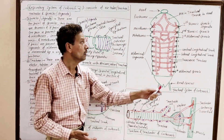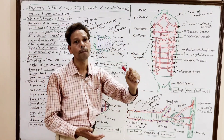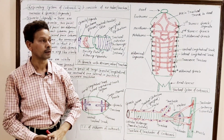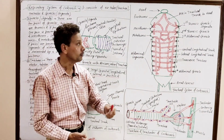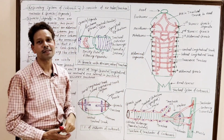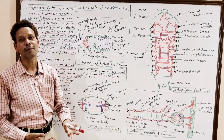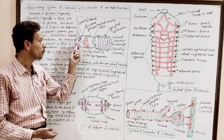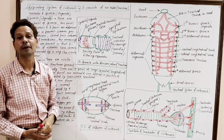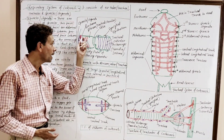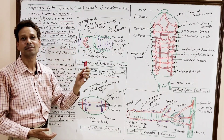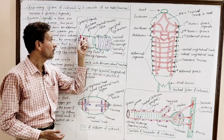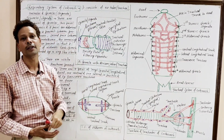The other spiracles open only at the time of inspiration. There are 10 pairs of spiracles or stigmata in total, and each spiracle is lined by an almost circular cuticular ring — that is a spiracular trachea.